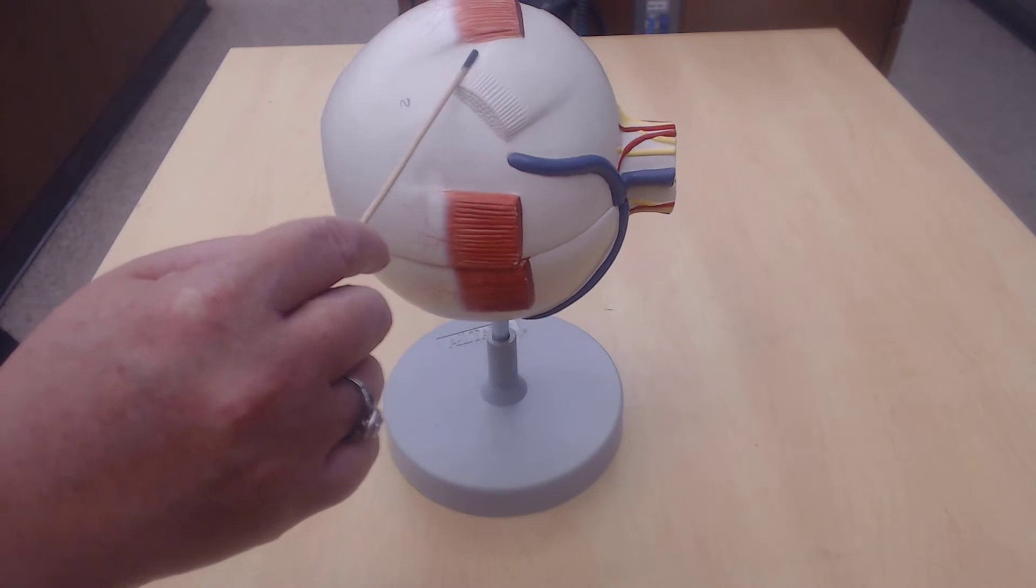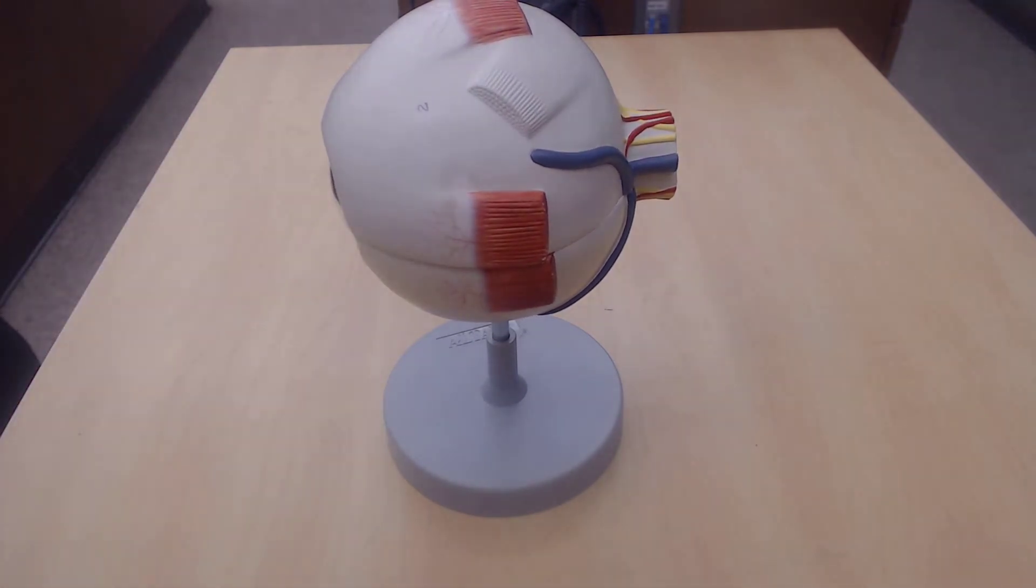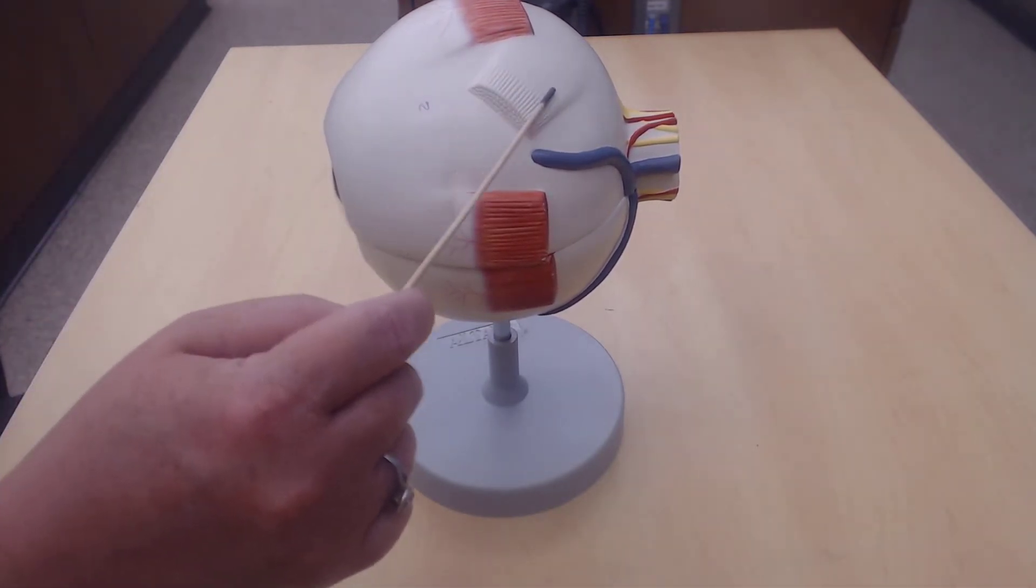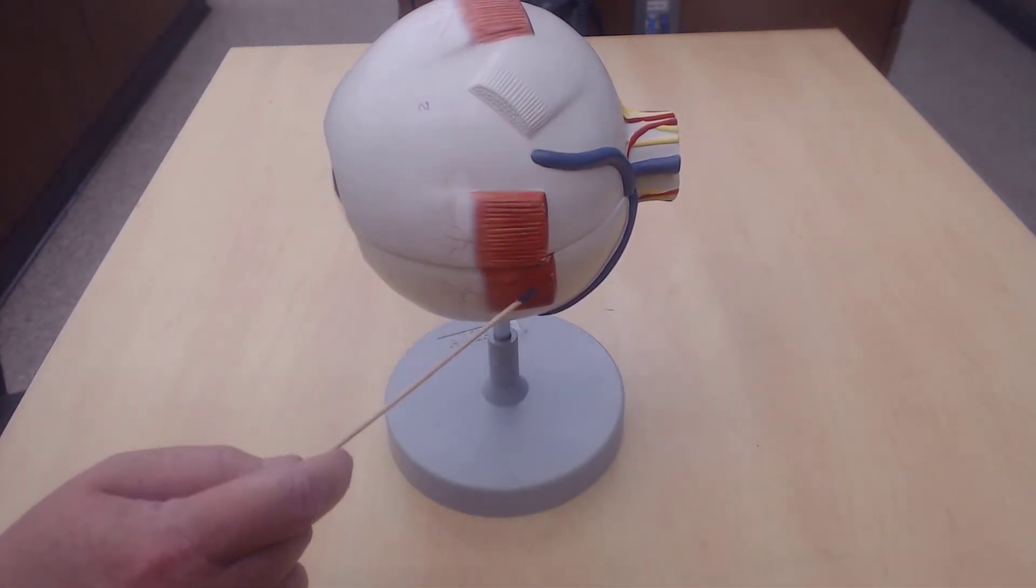This is the superior oblique. Superior oblique is going to be on the same side as the medial.